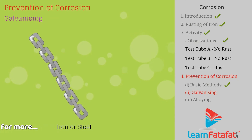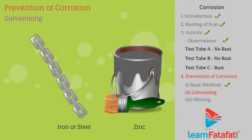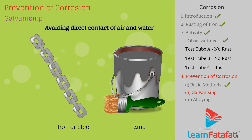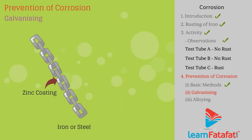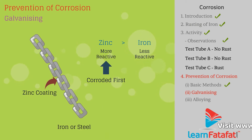Galvanizing. In this process, iron or steel metal is coated with a thin zinc layer, which avoids direct contact of air and water with the metal. Even if the coating breaks, the protection continues as zinc is more reactive than iron, and thus zinc gets corroded and protects the iron.